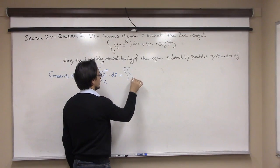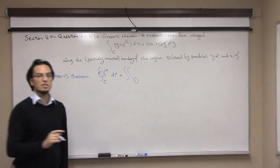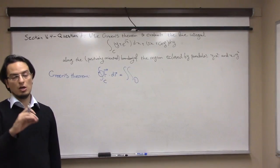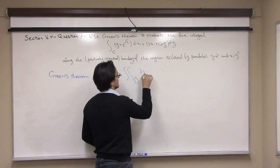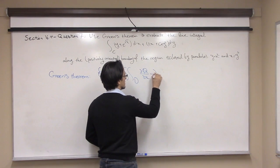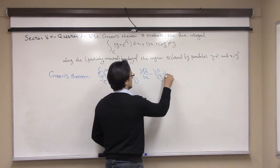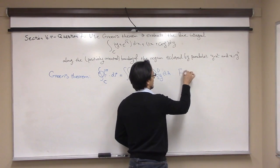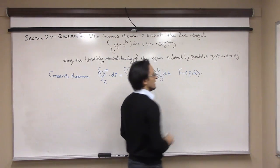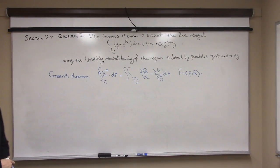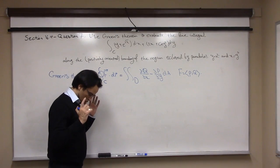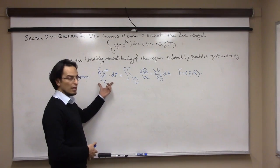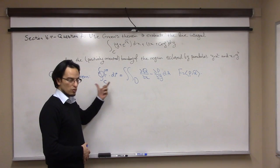If you want to evaluate such a line integral of a vector field, you can evaluate it using a double integral over the region inside the curve. The integrand is given by dQ/dx minus dP/dy, times dA, where P and Q are the first and second components of your vector field.